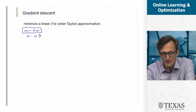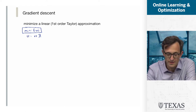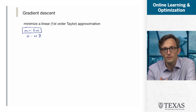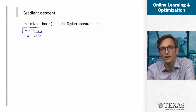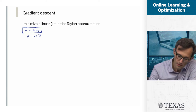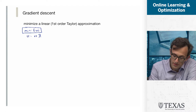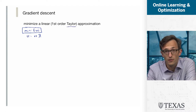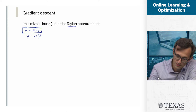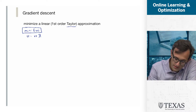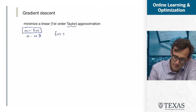A very simple idea present throughout engineering, applied math, and the sciences is: whenever something's too hard, why don't we just approximate it with something easy and try to deal with that. This is really one way to think about gradient descent. What is a way to approximate a function? Basically, let's use Taylor approximation. The simplest Taylor approximation is a first-order Taylor approximation — we can approximate f of x by a linear function.